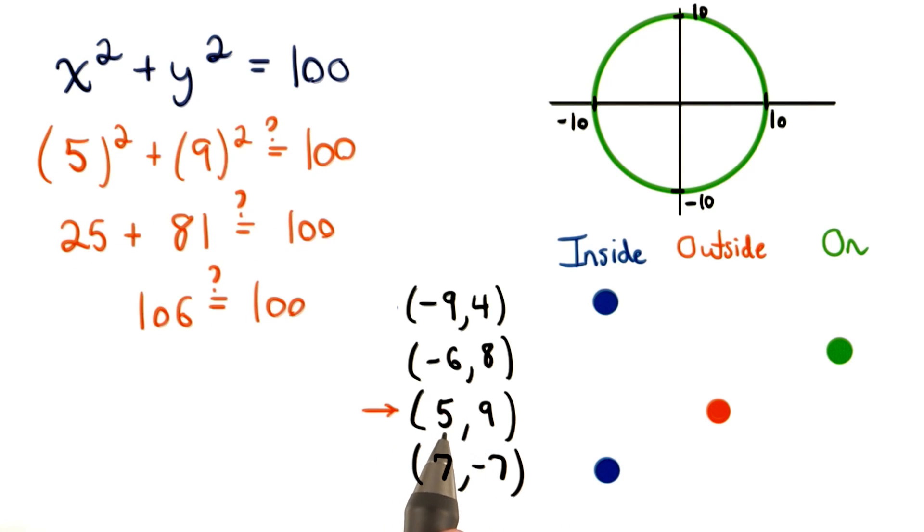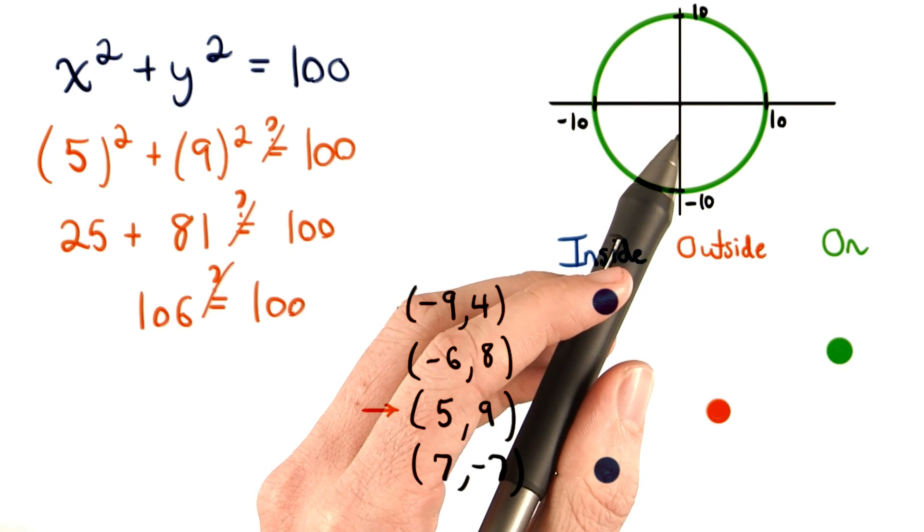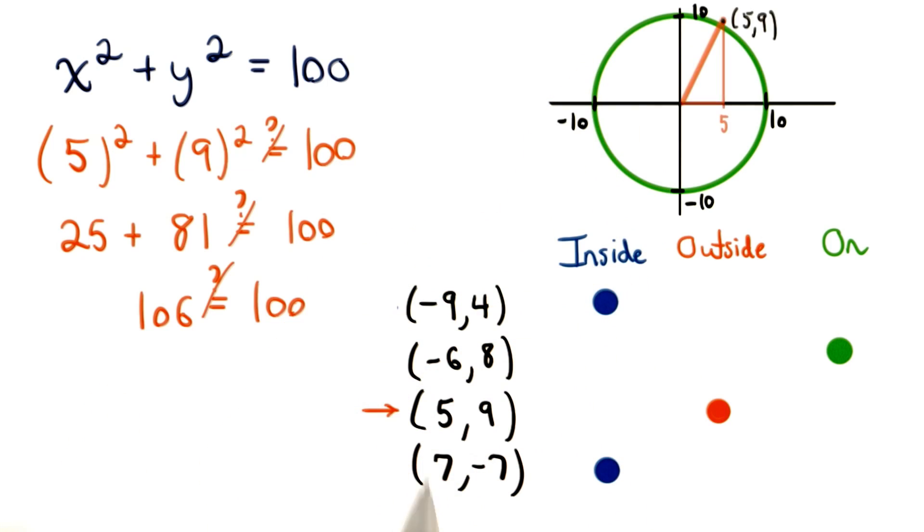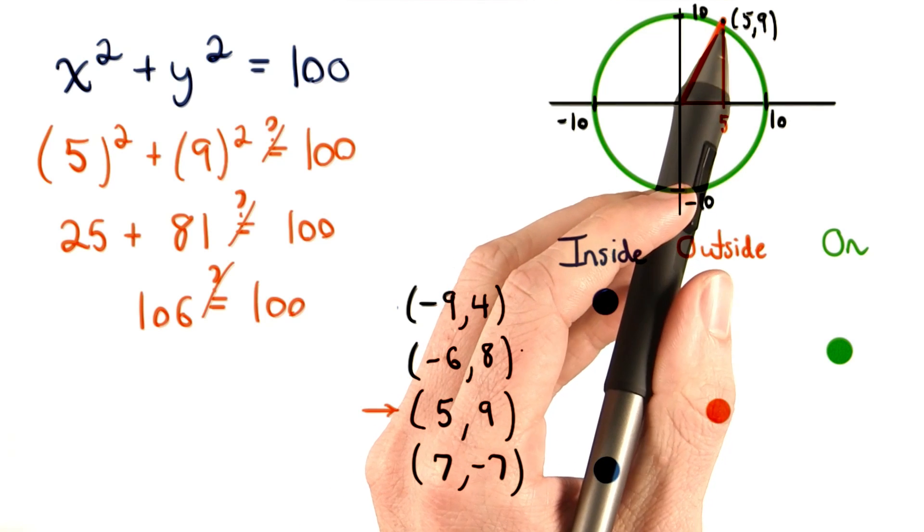And finally, for this point, when we plug in x with the value of 5 and y with the value of 9, we'll get 106 equal to 100. This isn't true, and we know 106 is greater than 100. That means that the distance of (5, 9) from the origin is greater than 10. The point (5, 9) would be just outside of our circle.